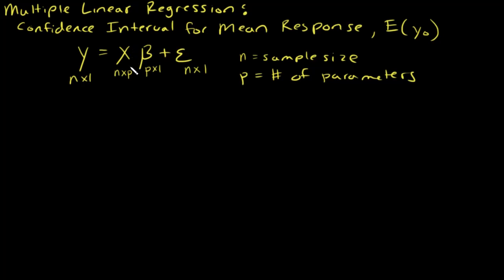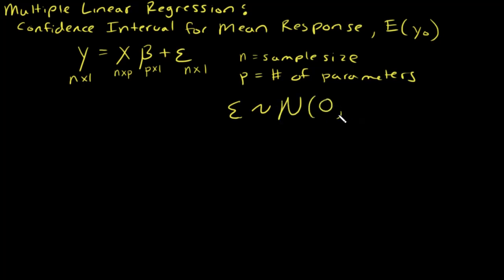Don't forget x — that first column is ones for the intercept, and then you have all your other x variables in that matrix. We're using the assumption that these model error terms are normally distributed with a mean of zero — that's an n by 1 vector of zeros — and variance sigma squared times I, where I is the n by n identity matrix.